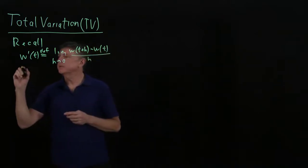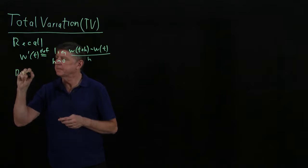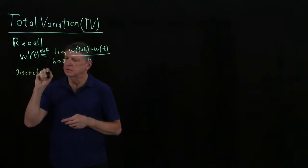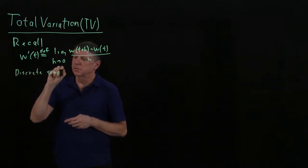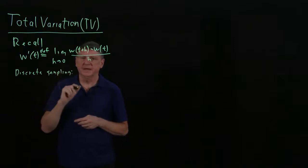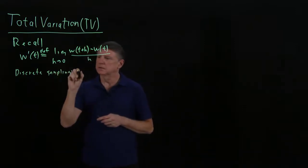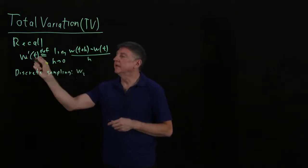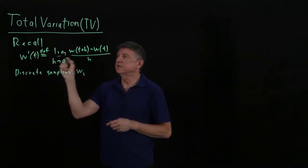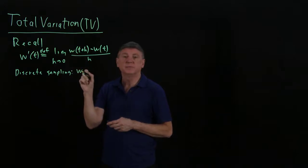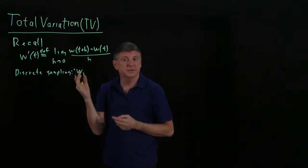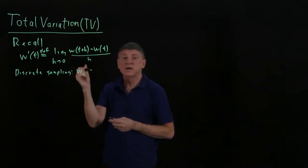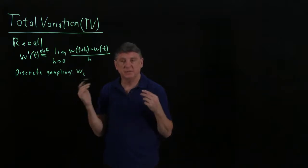Now, suppose that we have discrete sampling. That is, what we're given is we're given w sub i. That is, now we'll think w here was a function, now we're saying w is a vector, and it's a vector that has a certain number of entries. For example, n.